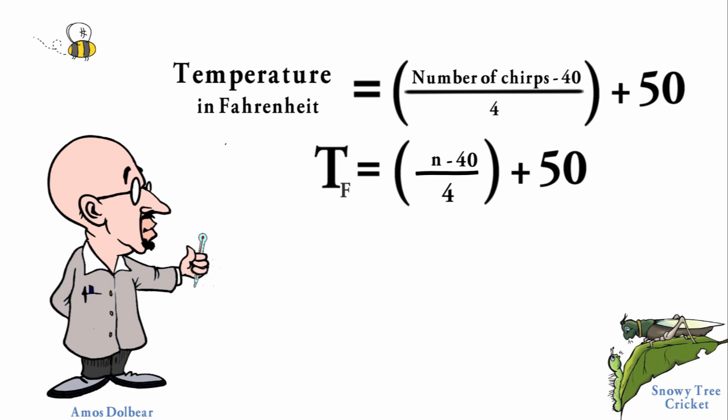By using the variables and an equal sign we've created an equation. We can use this equation to figure out the temperature by counting the frequency of chirps.